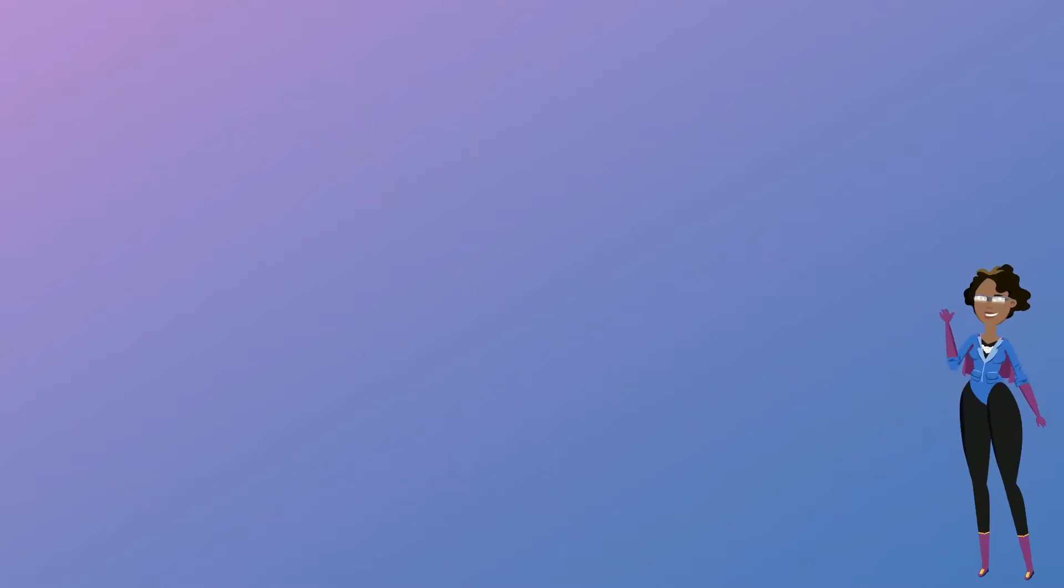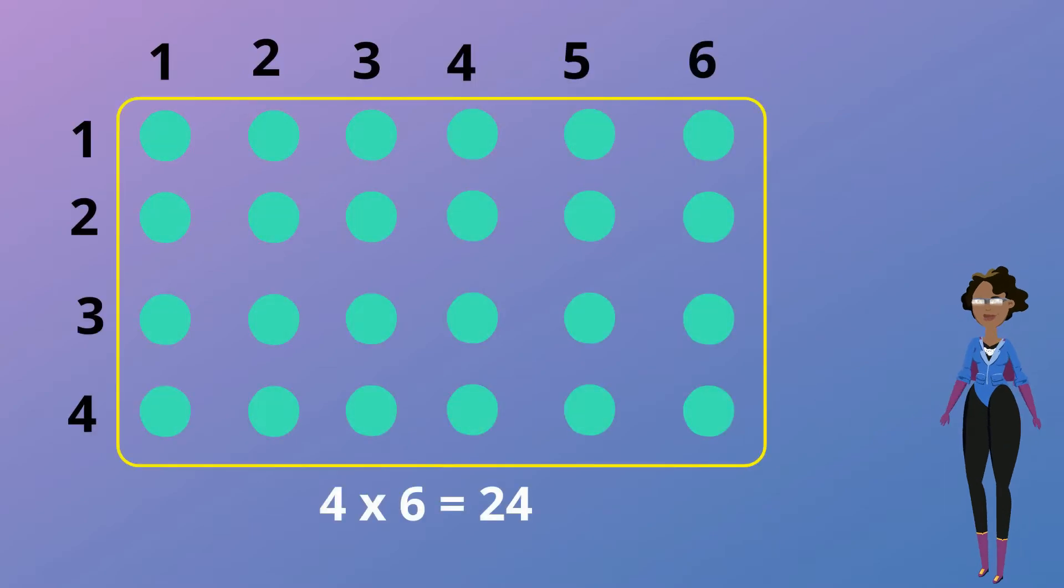One way to represent multiplication is by the use of an array. As you can see the above array, 4 rows of 6 which gives us a multiplication sentence 4 multiplied by 6 and our answer is 24.